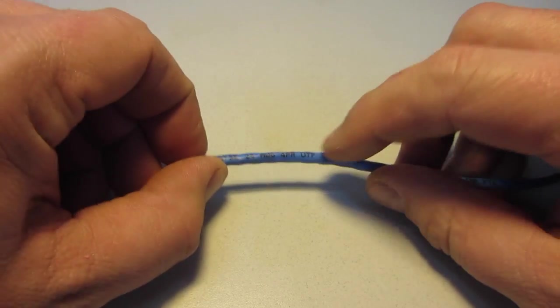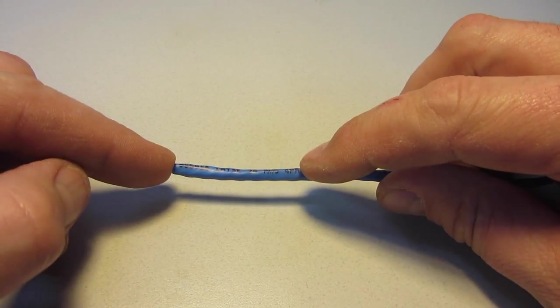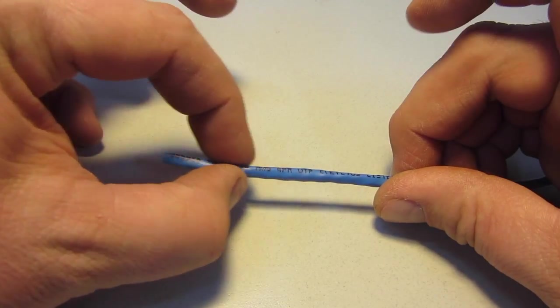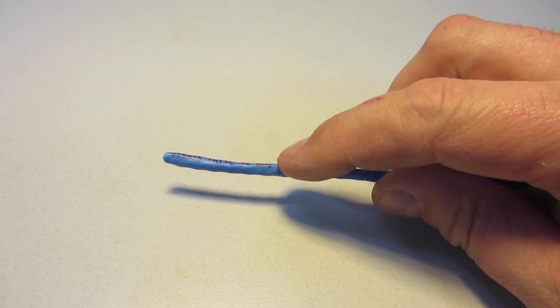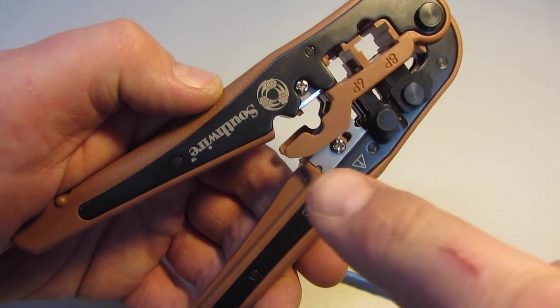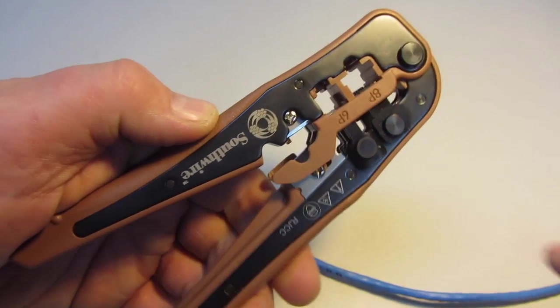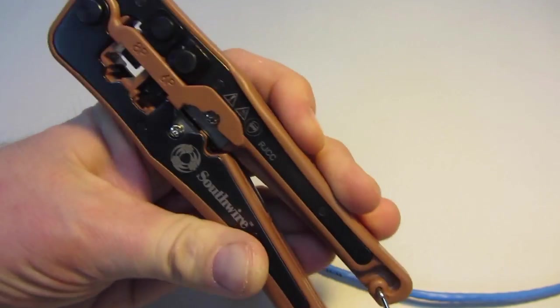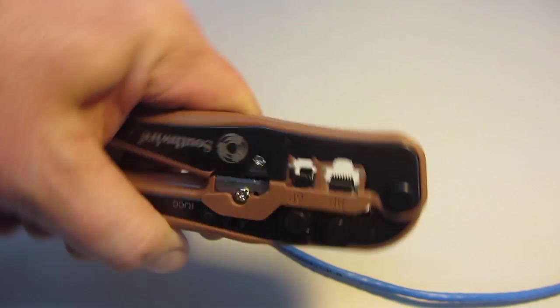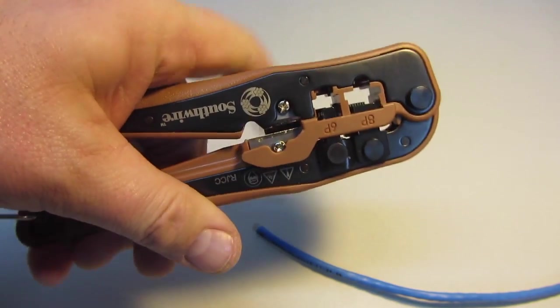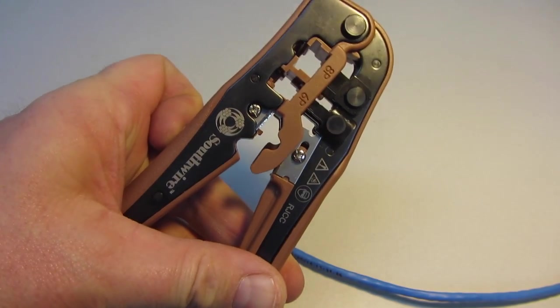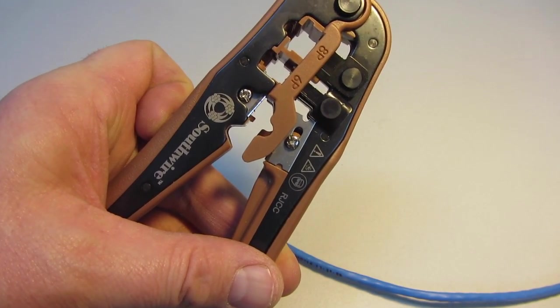The first thing we are going to need to do is strip off about an inch and a half of this outside blue jacket. By inserting the cable into this spot right here, I can ring all the way around the cable by twisting it and then I can pull the jacket right off.